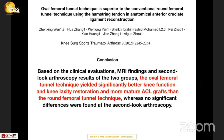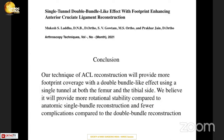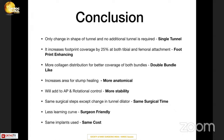Are there any clinical studies in the literature? Yes. A 2020 article in KSSTA reports MRI findings and second-look arthroscopy comparing rectangular versus conventional round tunnels. They found the oval femoral tunnel technique yielded significantly better knee function, knee laxity restoration, and more mature ACL graft than the round femoral tunnel technique. A 2021 article also shows that the rectangular tunnel technique can create a larger bone tunnel and achieve superior clinical results than conventional round anatomical single bundle ACL reconstruction. My own paper on this technique has been accepted and published in Arthroscopy Technique — the key difference being that I have also applied it to the tibial side, which most other surgeons have not.